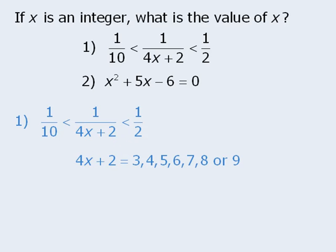Now since 4x plus 2 can have several possible values, it seems that x can have several possible values, in which case we might conclude that statement 1 is not sufficient. However, this would be an incorrect conclusion. Here's why.